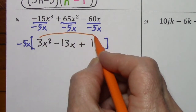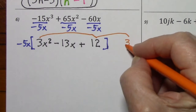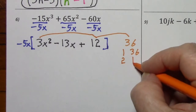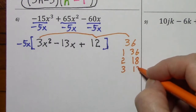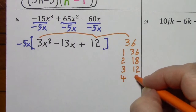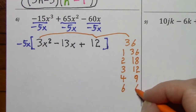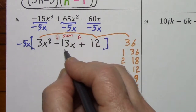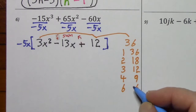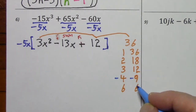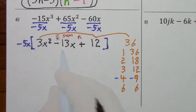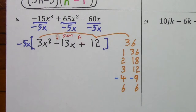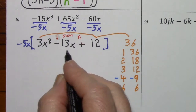Multiply first times last and list the factors. Cut that in half. 5 won't work. 6 works. Noting that the last term is positive, we want a sum of negative 13. Looking at our factor pairs, if we had negative 4 and negative 9, we could get our negative 13. I'm going to keep the negative 5x, but drop it down in front of the answer, and just do factor by grouping with what's in the brackets.